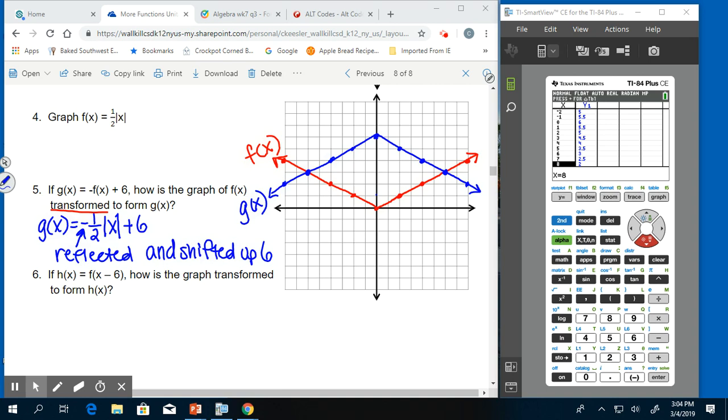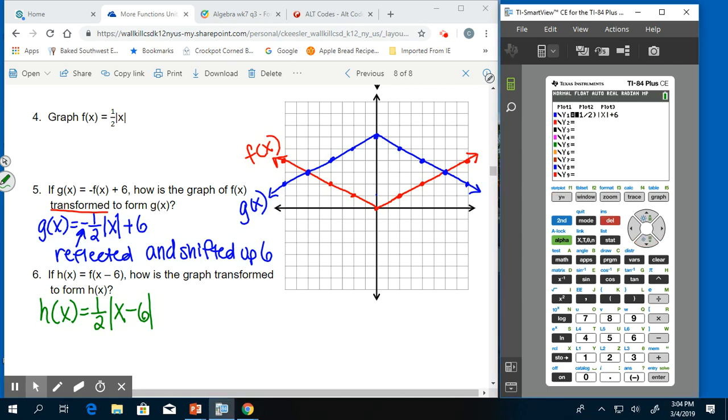All right. Lastly, we're going to try one more, h of x. So in this case, we have h of x equals f of x minus 6. So we go back to our original f of x. And we're going to replace x inside the absolute value with x minus 6. So we have h of x equals 1 half of x minus 6. How is the graph transformed to form h of x? So again, we go back to our y equals. We can delete the negative. We can delete the plus 6. And we can insert minus 6 into the absolute value and pull up our table.